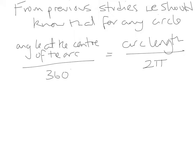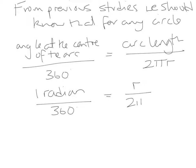If we look at the circle we had previously, the angle at the center of the arc was 1 radian, and that was over 360 degrees. The length of the arc we said was a radius, because we had moved round the circumference of the circle a length of r. So we have r over 2 pi r on the bottom. What we're going to do is simplify this and rearrange to find a value for 1 radian.